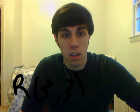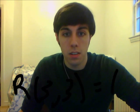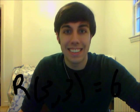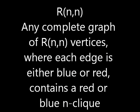What we've really just shown is that the diagonal Ramsey number for n equals 3 is equal to 6. We can denote this as r(3,3) = 6. So r(3,3) is what we call the diagonal Ramsey number for n equals 3. Of course, this can be generalized to r(n,n).